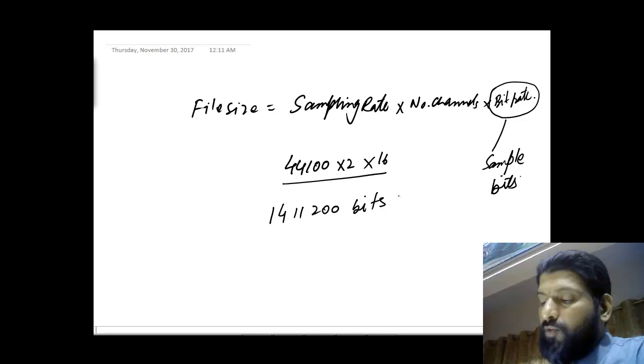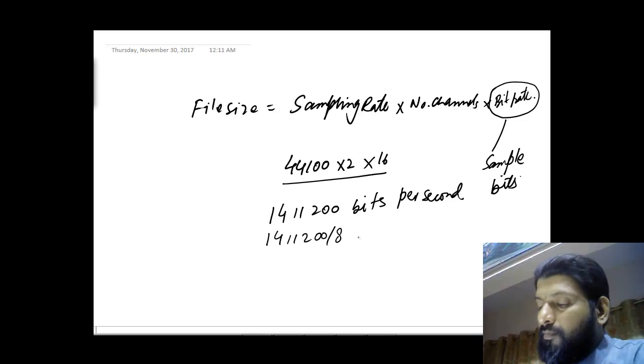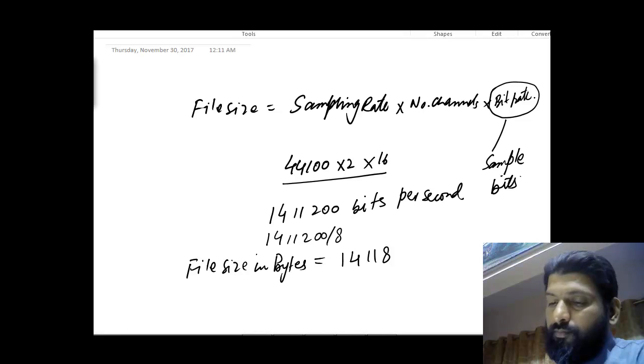1,411,200 bits per second. And if you divide it by 8, it will give you the number of bytes. You can write this file size in bytes. Here it is in bits. So you will see 1,411,200.